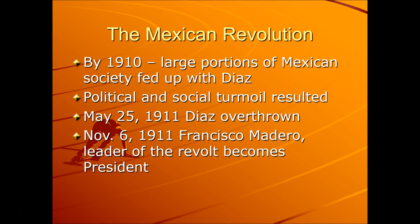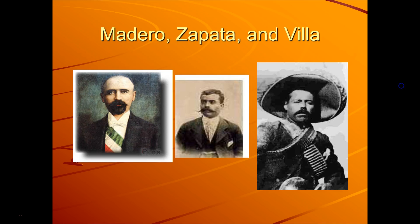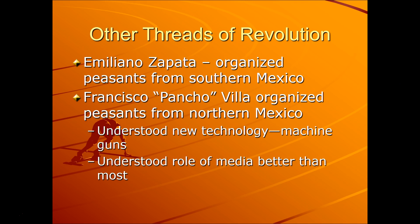From this dissension, by 1910 large portions of Mexican society were fed up with Diaz and his initiatives. Political and social turmoil resulted — people were worked up over it, and rightly so, because they were mistreated. You cannot mistreat people forever without them rising up. In 1911, Diaz is overthrown and Madero becomes the new president. Revolution — out with the old, in with the new. And this becomes the trinity of the Mexican Revolution. Just as Italy had Mazzini, Cavour, and Garibaldi, for Mexico it was Madero, Zapata, and Villa — and they kept this revolutionary fervor going.